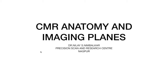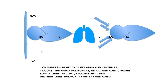Today we will be talking about CMR anatomy and imaging planes. I am Dr. Nilay Nimbalka from Precision Scan and Research Centre, Nagpur. The heart is a complex structure, similar to a two-room apartment with a common wall in the form of the inter-atrial septum and interventricular septum, with four automatic doors operated by pressure gradients, with veins as supply lines and arteries as delivery lines. In addition, it does not follow the normal orthogonal planes of the body — axial, sagittal, coronal — and follows its own axis and contraction pattern. So to describe its anatomy and planes, we will follow a mixed approach: first the orthogonal planes, followed by anatomy, and then cardiac planes for cardiac myocardial anatomy.